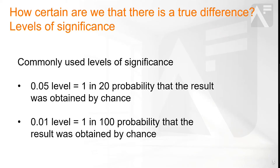After calculating the probability that the result was obtained by chance, the analyst then has to make a decision about how much uncertainty is acceptable. The level of significance describes the level of certainty. Commonly used levels are the 0.05 level of significance, which translates as a 1 in 20 chance that the result was obtained by chance, or the 0.01 level, which translates as a 1 in 100 chance.